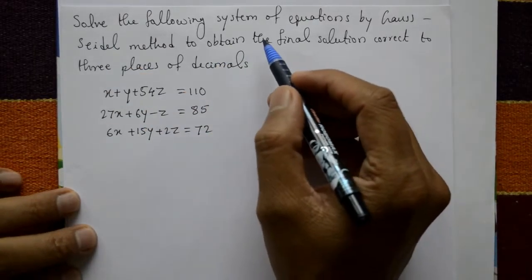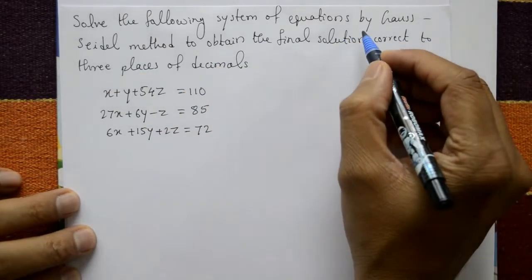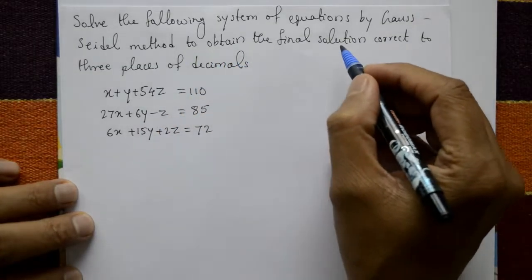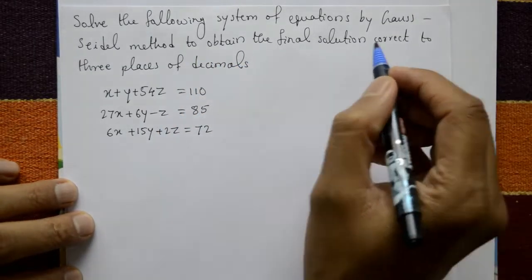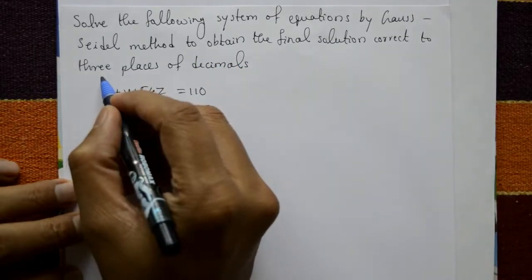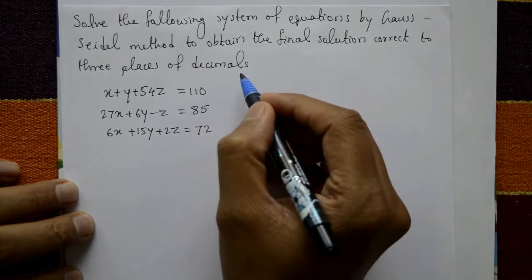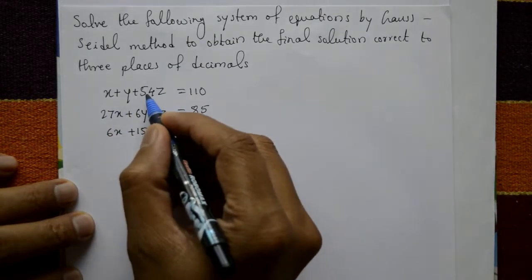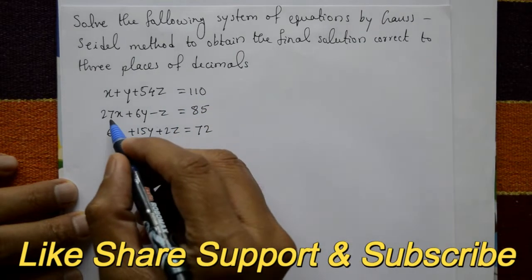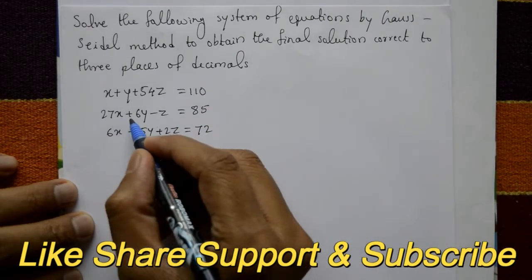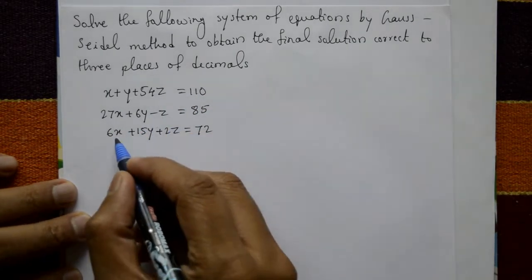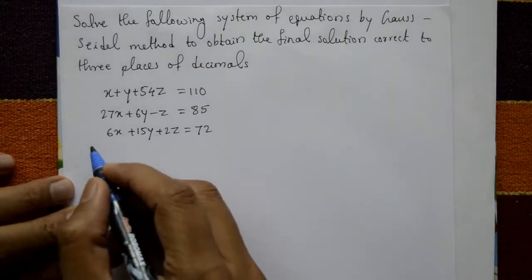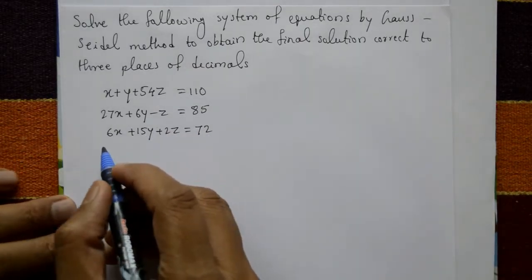Solve the following system of equations by the Gauss-Seidel method to obtain the final solution correct to three decimal places. The equations are: x + y + 54z = 110, 27x + 6y − z = 85, and 6x + 15y + 2z = 72.